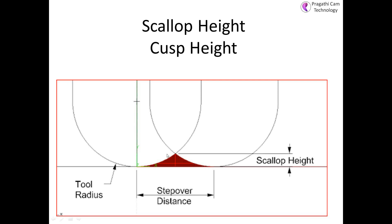Suppose this is the cutter, and the step over distance given in your program is, for example, 0.5. So the cutter shifts 0.5 from its original position. The height that projects between both center points of the cutter — that height is called the scallop height.